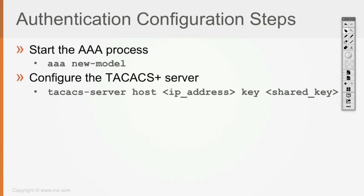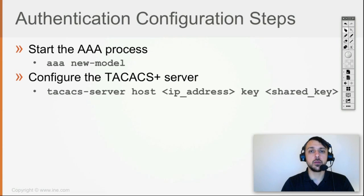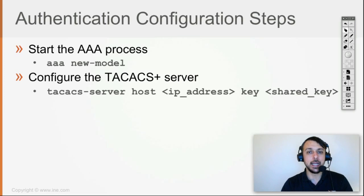Once you have defined 'aaa new-model', you're allowed to configure the TACACS server you want to communicate with. There are a lot of variations — two to four configuration options to define a RADIUS or TACACS server. Within the scope of the CCNA blueprint, I'm going to use the oldest one, which is not the most commonly used but one everybody should be aware of, even though it's no longer recommended because Cisco is aging it out.